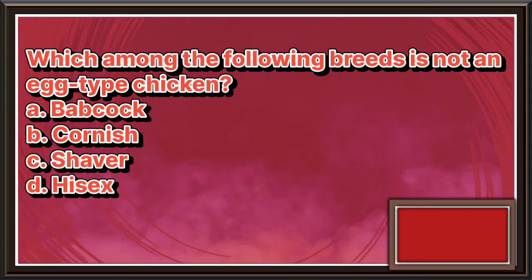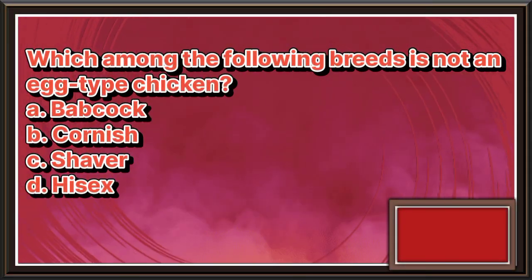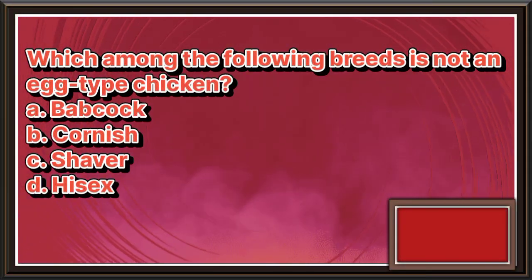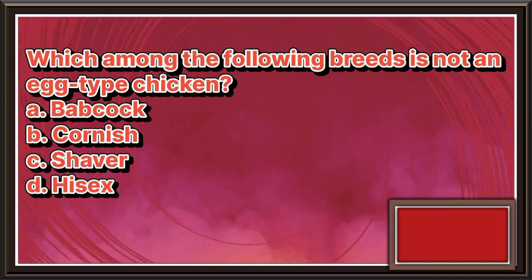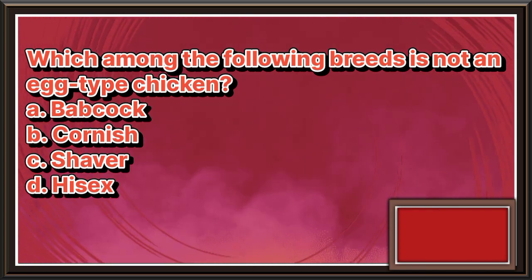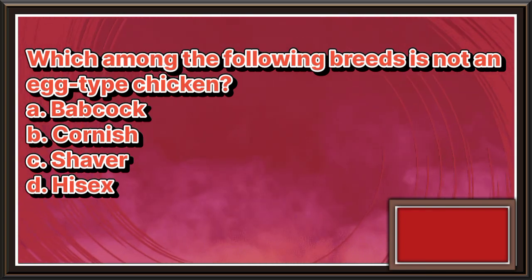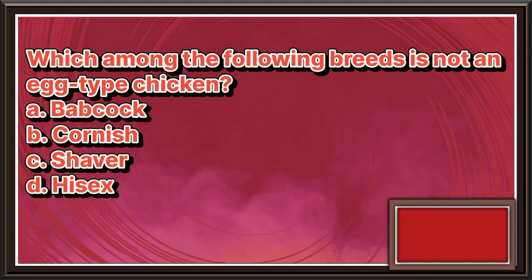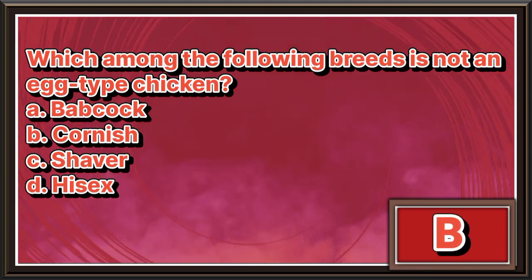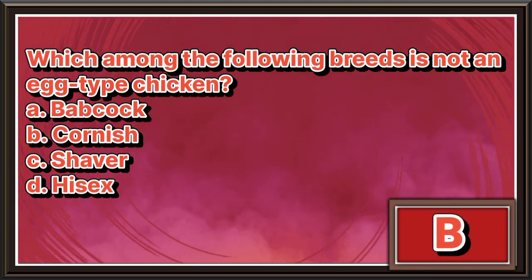Which among the following breeds is not an egg-type chicken? A. Babcock. B. Cornish. C. Shaver. D. Hissex. The answer is letter B.